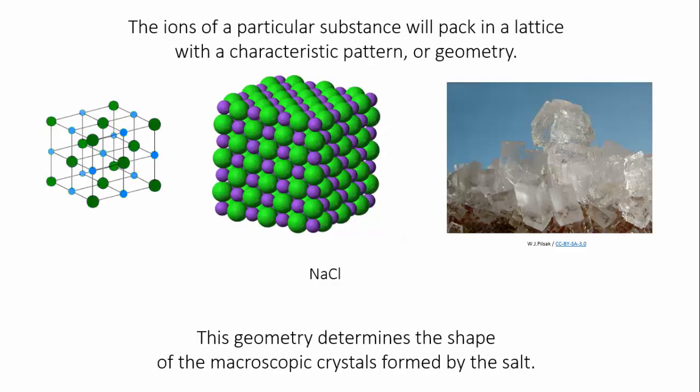Because different ions are different shapes and sizes, there isn't a single best way for all ions to pack into a lattice. Each ionic substance has a characteristic way of packing.